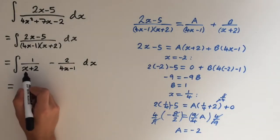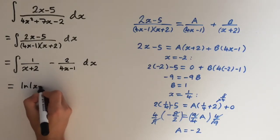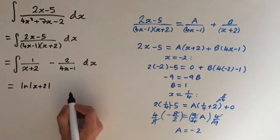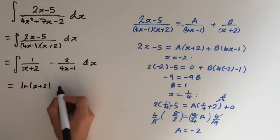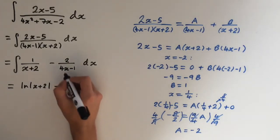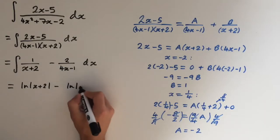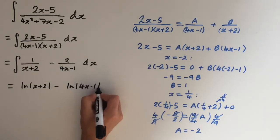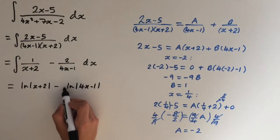So the integral of 1 over x plus 2 is the natural logarithm of x plus 2. And when we integrate 1 over 4x minus 1, we're going to get ln of 4x minus 1.